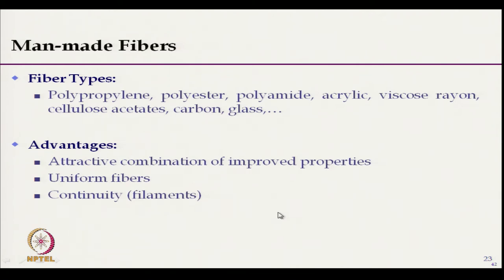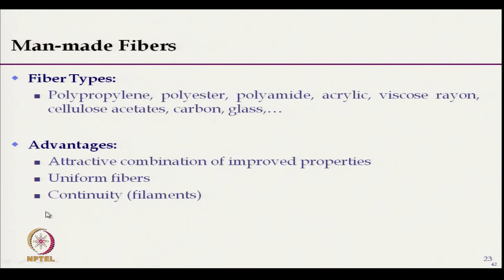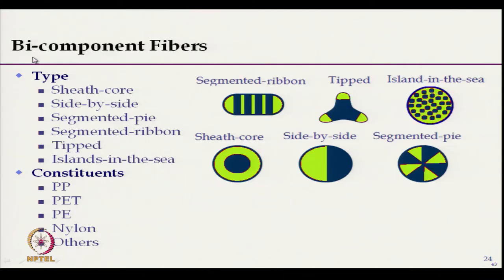Among manmade fibers, we use polypropylene, polyester, polyamide, acrylic, viscose, and rayon, depending on the type of application. Carbon or glass fiber can also be used. For very high temperature filtration applications, fibers with high melting points are required. Main advantages include an attractive combination of properties, uniform fiber dimensions allowing us to engineer the filter medium, and fiber continuity for filament-based mesh applications.